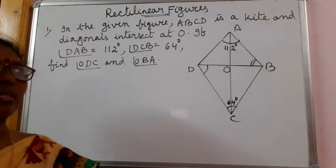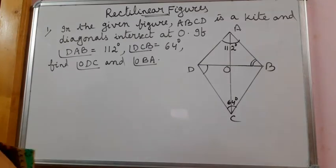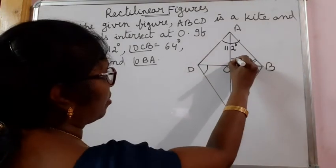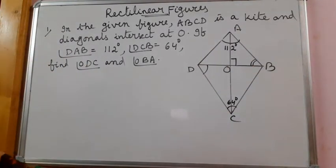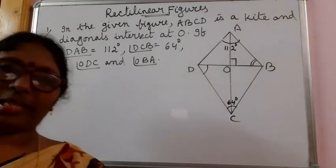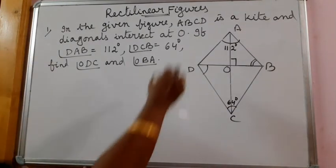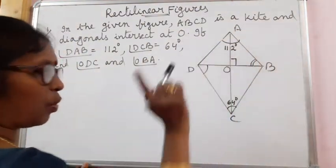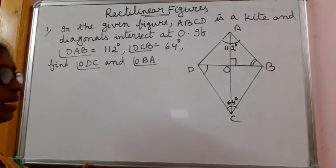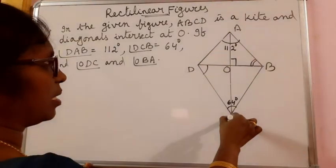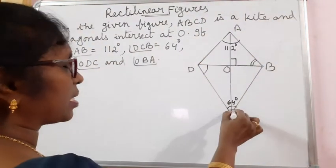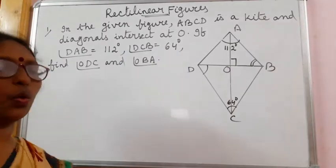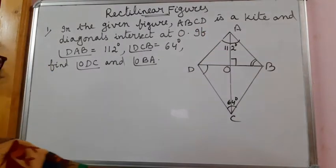The angle between the two diagonals of a kite is 90 degrees, and also one diagonal bisects the other diagonal. This diagonal divides the angles at the vertices into two equal parts, or we can say bisects.